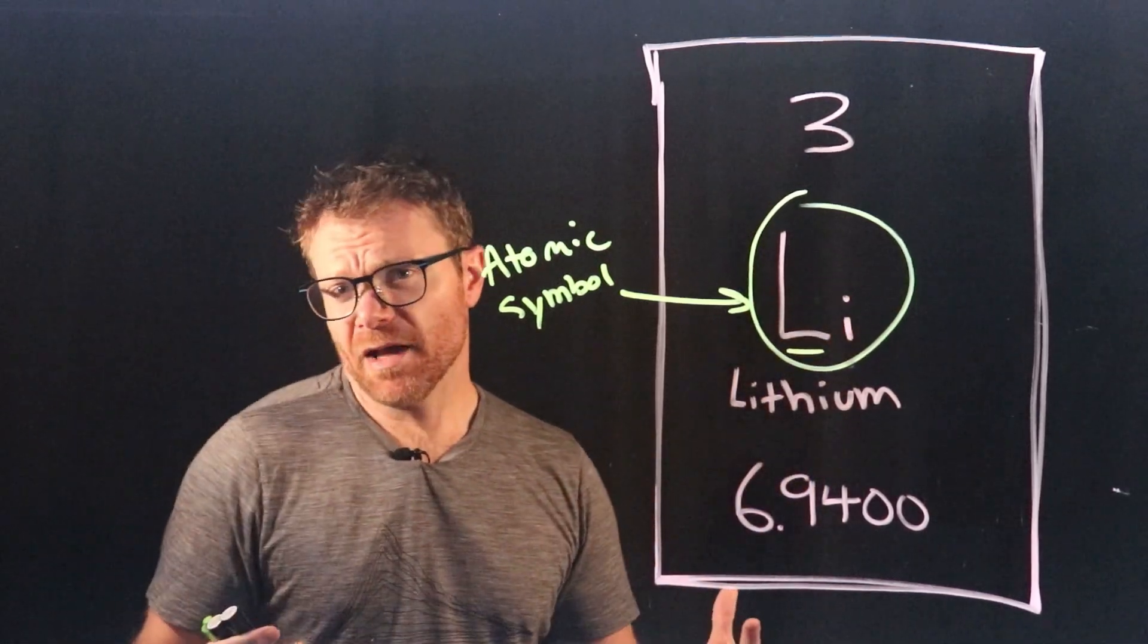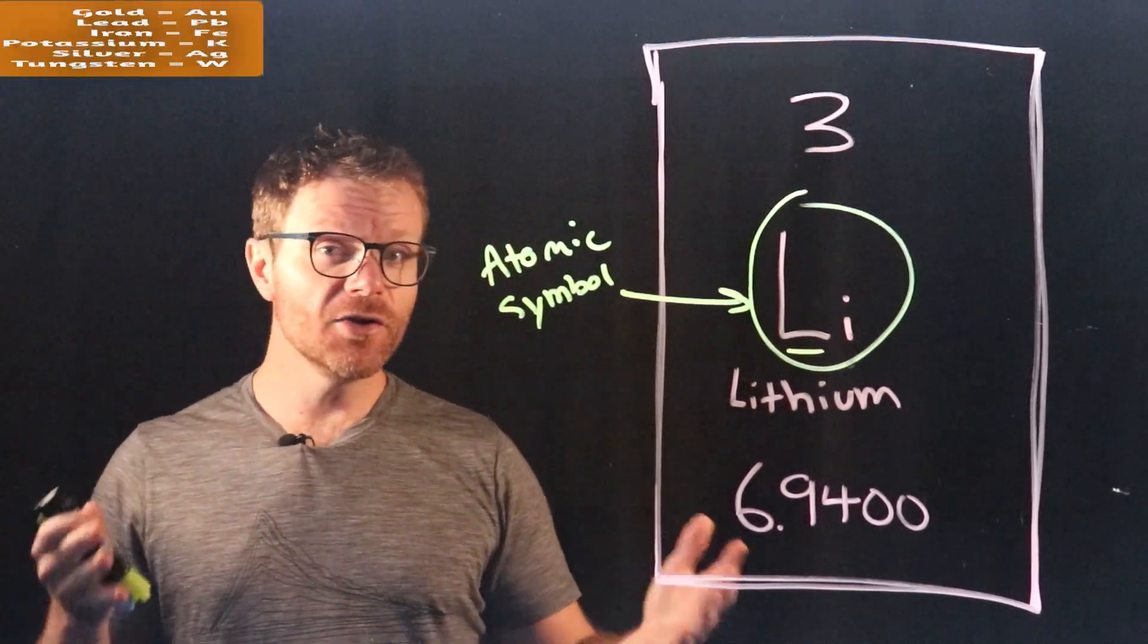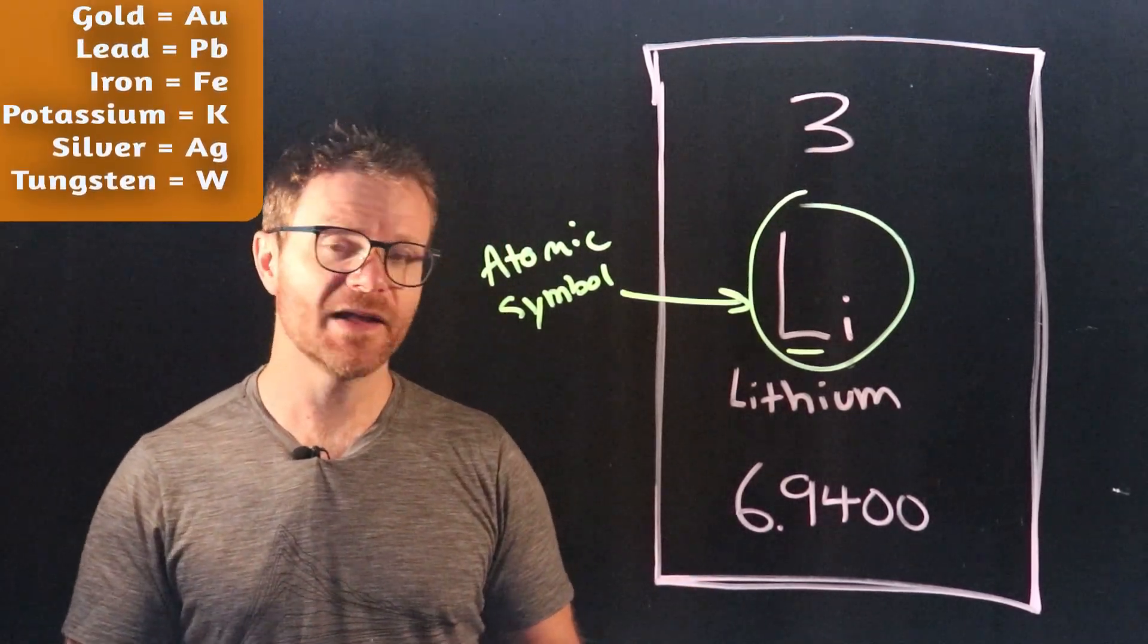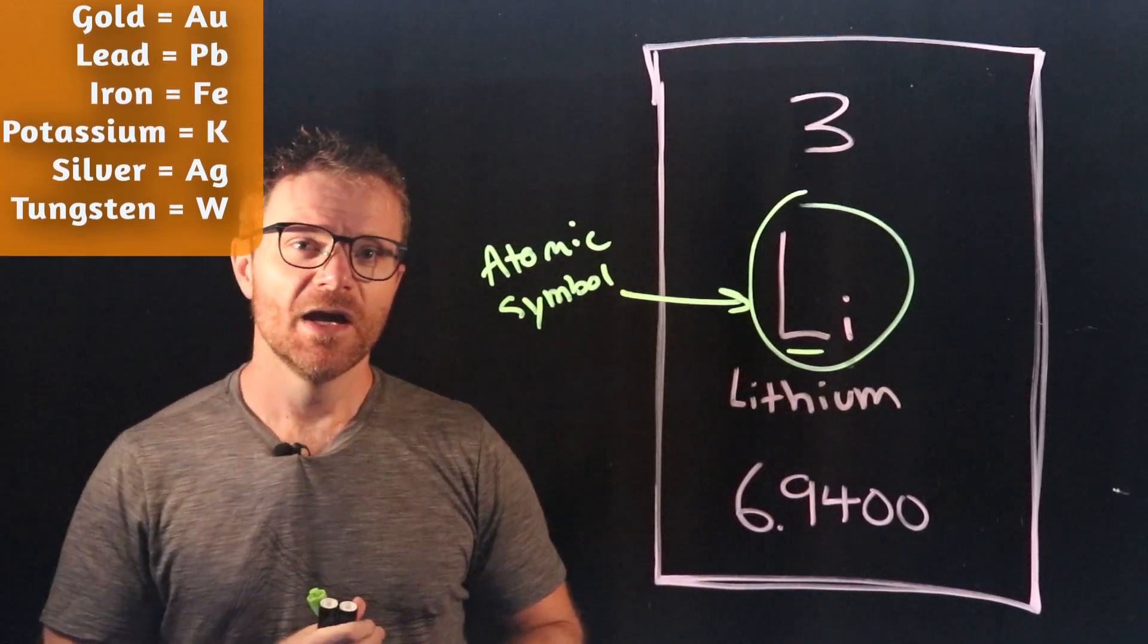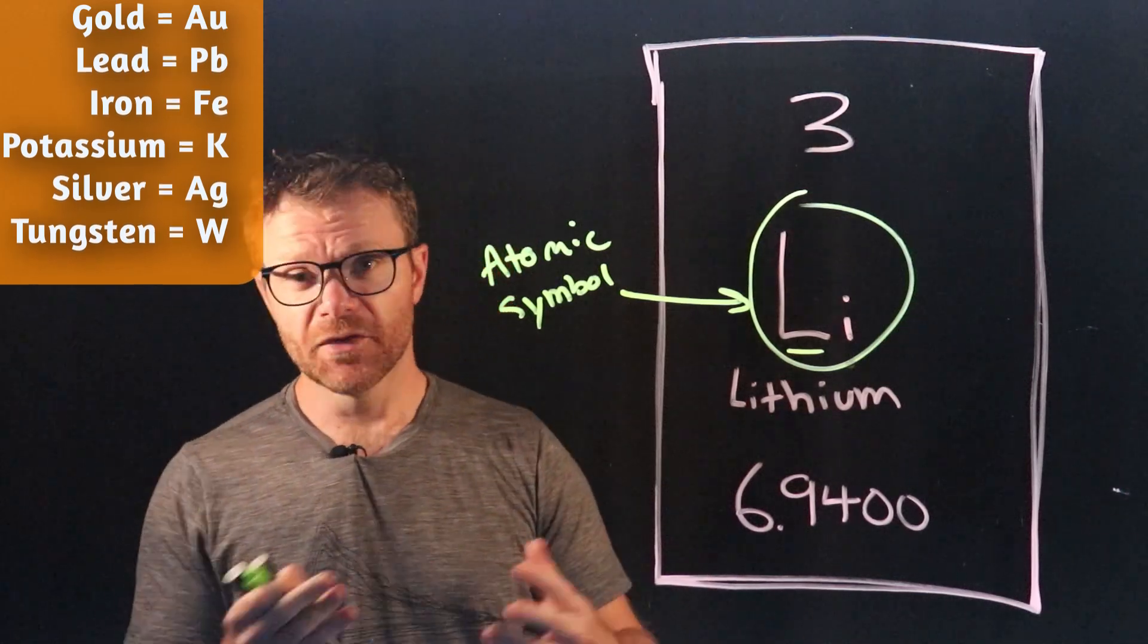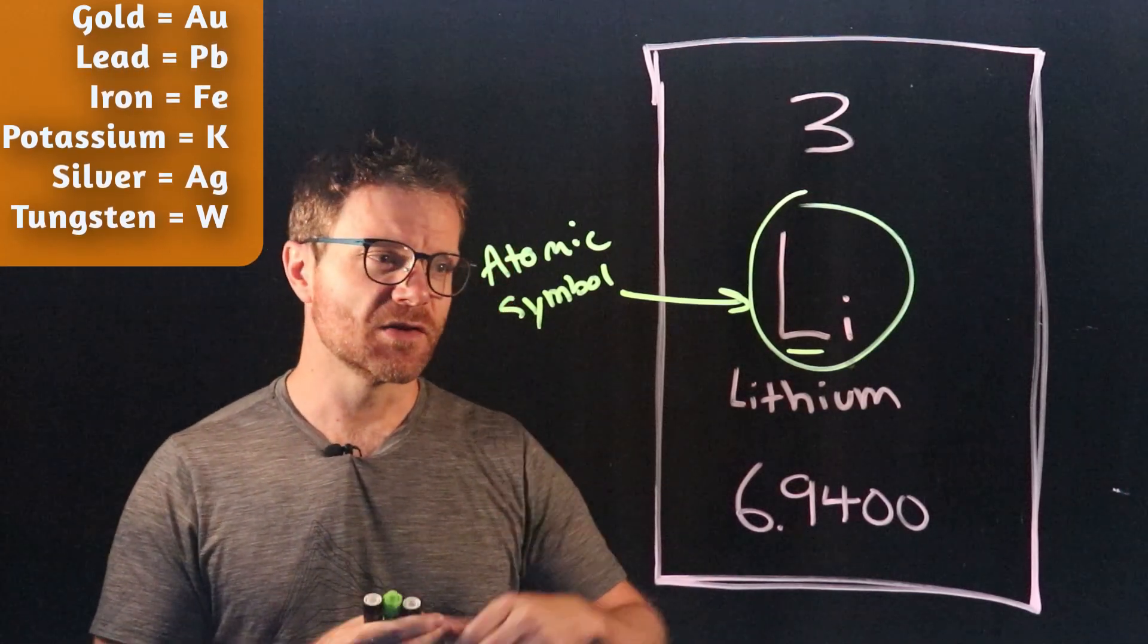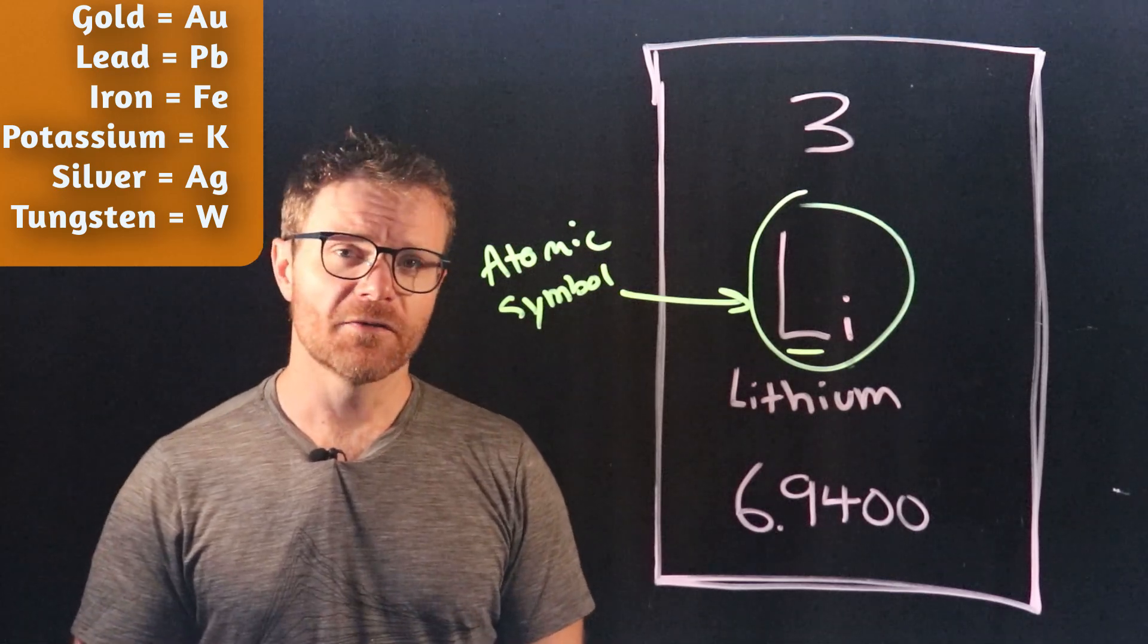But for some elements like gold, for example, the atomic symbol is Au. It's not G-O. That's because some of these atomic symbols represent really old elements, and so they would be described in earlier languages, such as Latin. A few of them are in German and that sort of thing, so they might not match up perfectly with the elements that you might think.